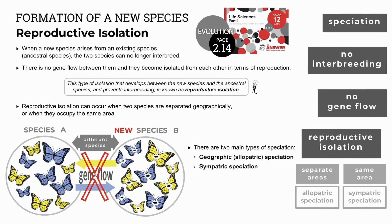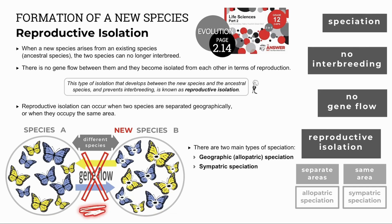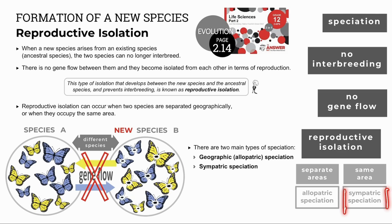When speciation occurs, the new species and the ancestral species can no longer interbreed. Because there's no gene flow, there's no interbreeding — this is known as reproductive isolation. Reproductive isolation can occur when the two species are in separate areas separated by a geographical barrier; we call this allopatric speciation because 'allo' means other. Or when they occupy the same area, this is known as sympatric speciation because 'sym' means together or the same.